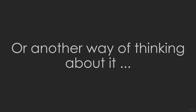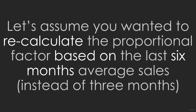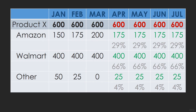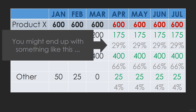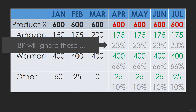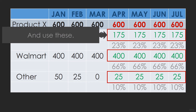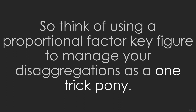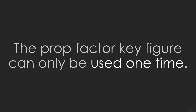Or another way of thinking about it: let's assume you wanted to recalculate the proportional factor based on the last six months average sales instead of three months. You might end up with something like this. But it doesn't matter, because you've already populated the statistical forecast quantity key figure. IBP will ignore these and use these. So think of using a proportional factor key figure to manage your disaggregation as a one-trick pony — it can only be used one time.